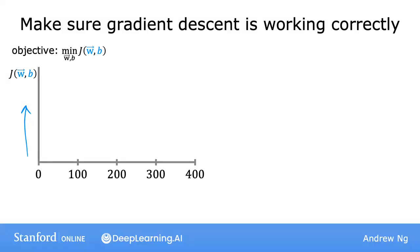Remember that each iteration means after each simultaneous update of the parameters w and b. So in this plot, the horizontal axis is the number of iterations of gradient descent that you've run so far. And so you may get a curve that looks like this.